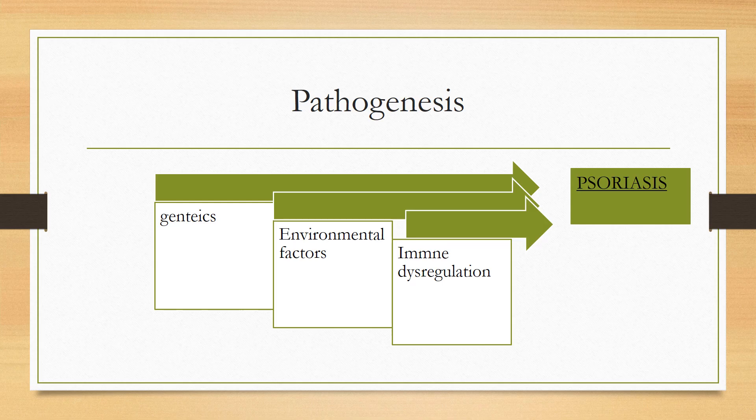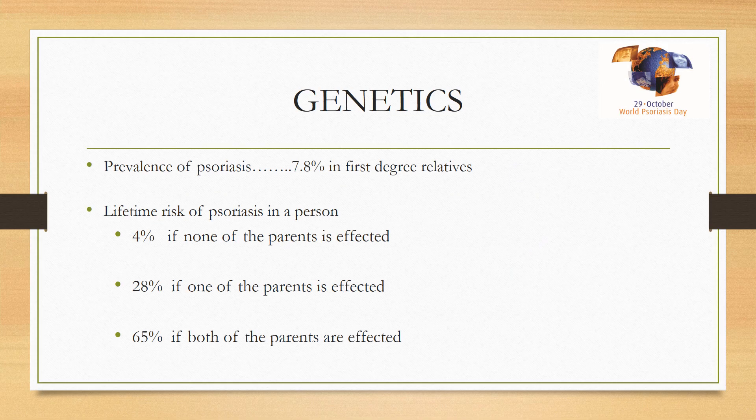Now, the main pathogenesis of psoriasis. There are basically three key factors: first, genetics, which is of paramount importance, especially in Type 1 presenting in early age; second, environmental factors; and the interplay of these two factors leads to immune dysregulation. These three together lead to psoriasis.